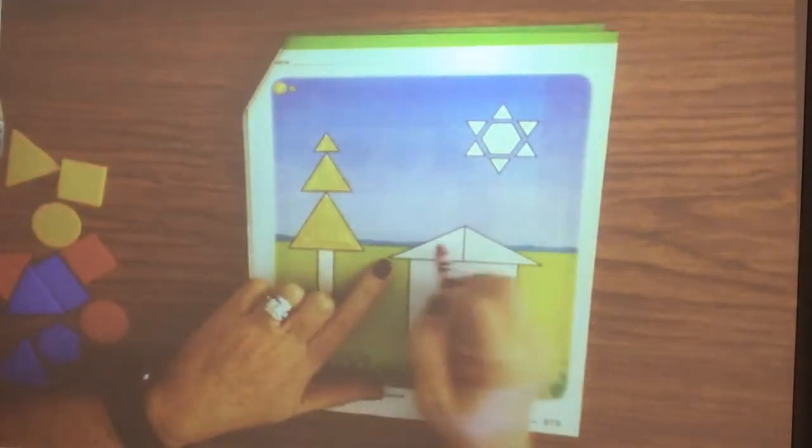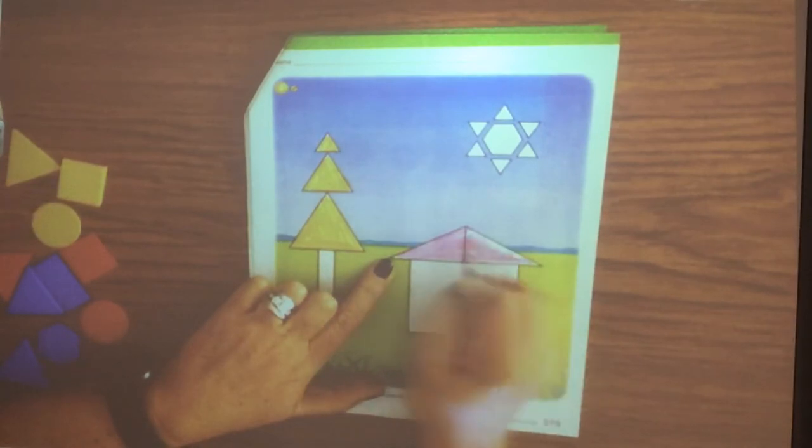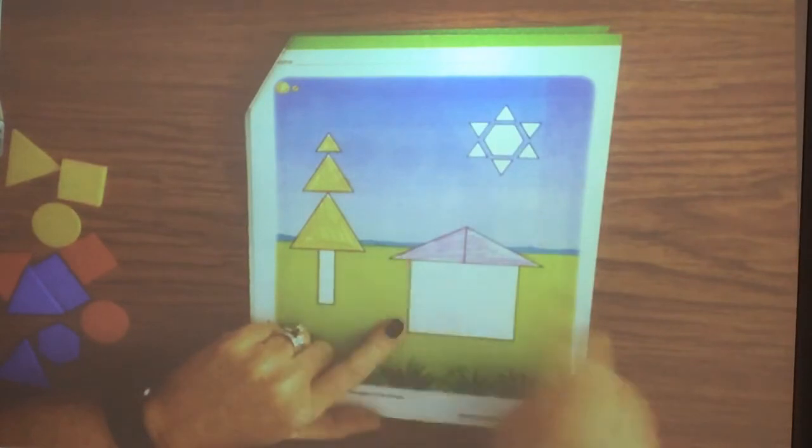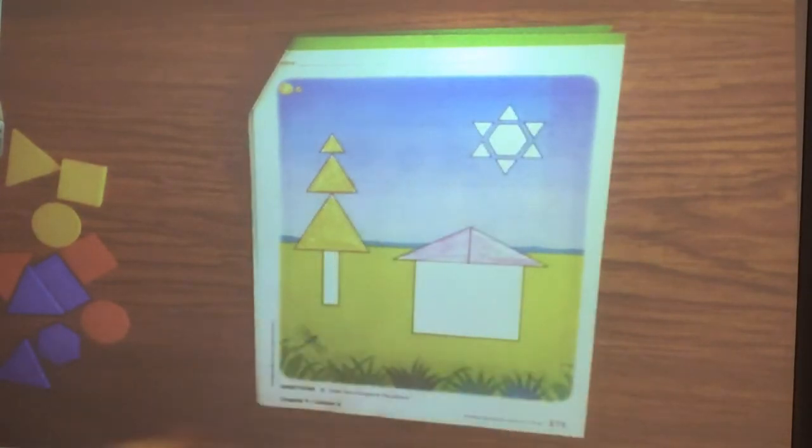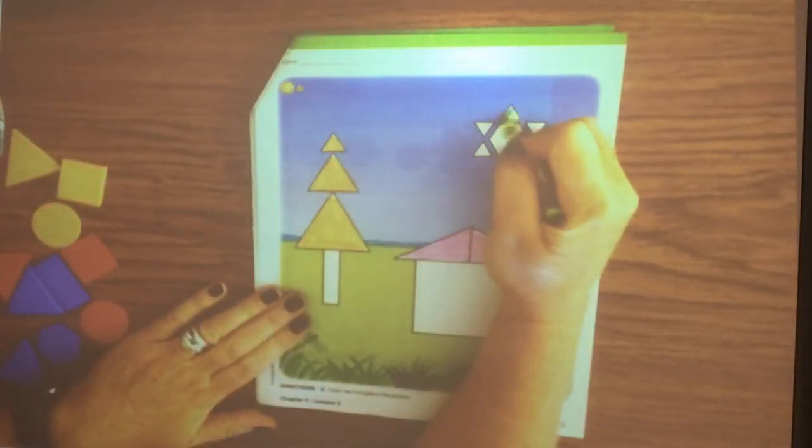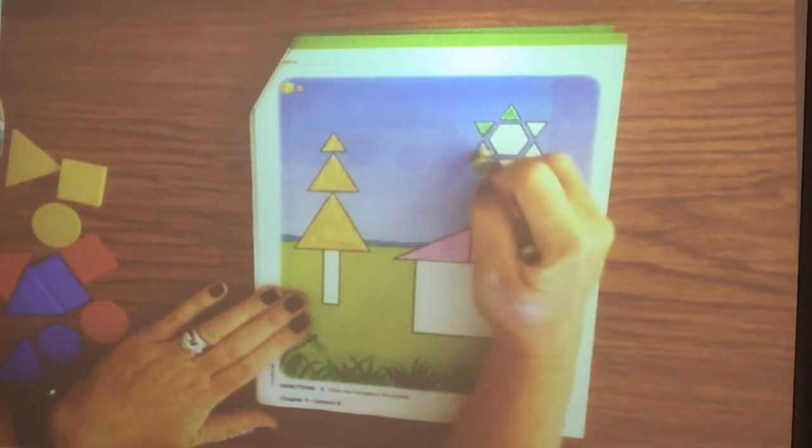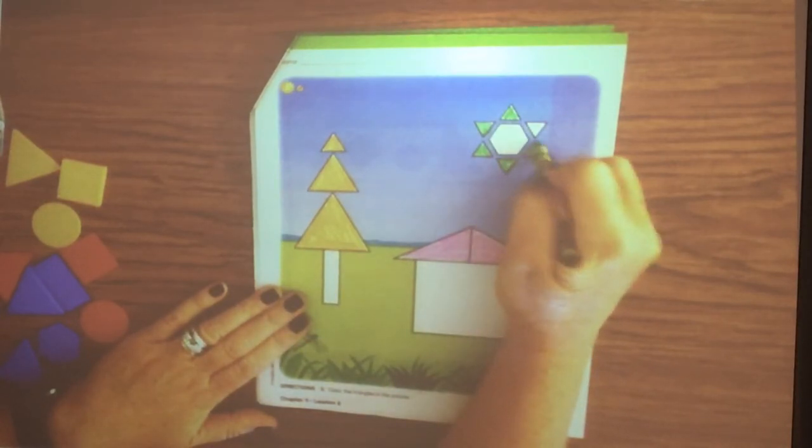Well, here's a couple. Three sides, three vertices. So this one is a triangle and this one is a triangle. Oh, here's some up at the top. Some little ones. Don't forget them. Color all the triangles.